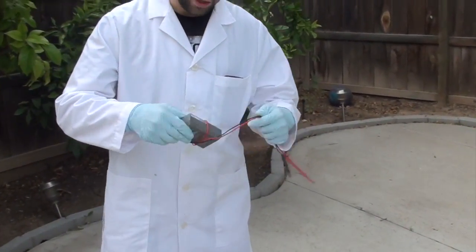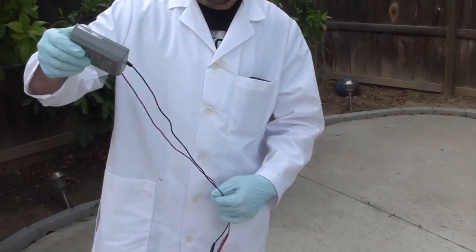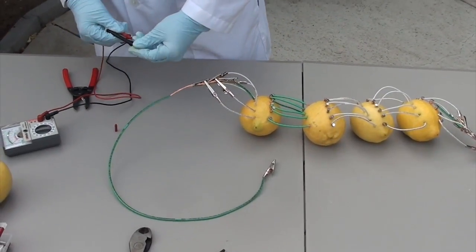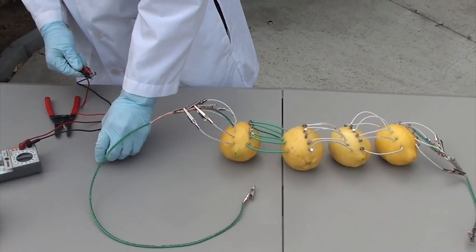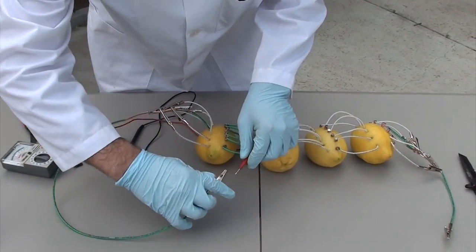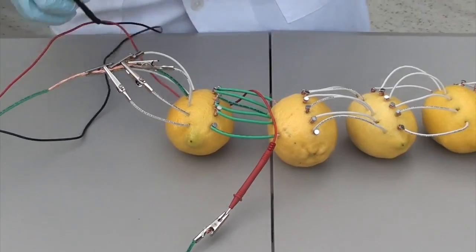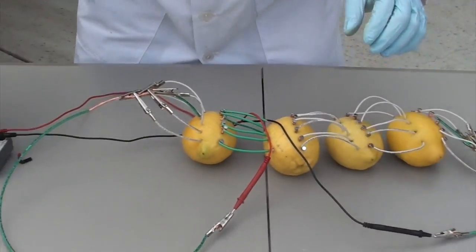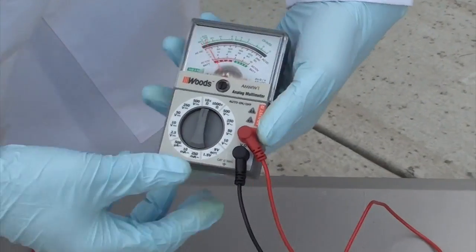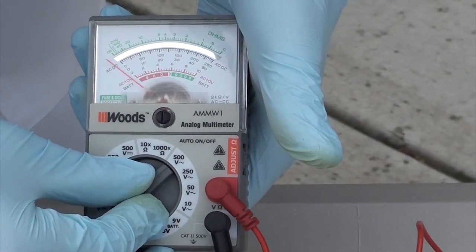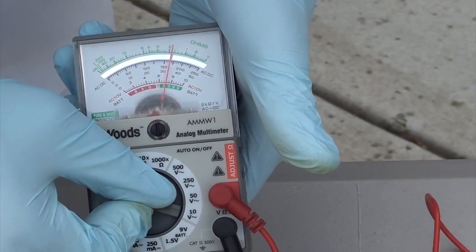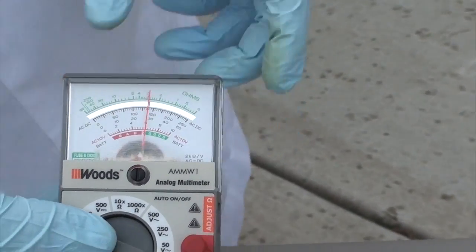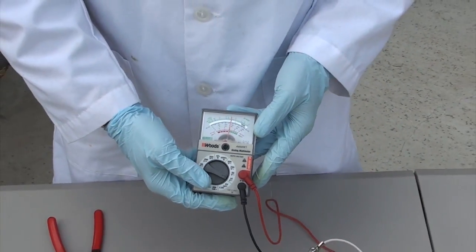Now we are going to check if our lemon battery actually produces a charge. So we're going to use this voltmeter and we're going to connect the red side to the positive end and the black side to the negative end. As you can see, we're going to twist this to DC 10 volts, and it should read that we have about 3 volts coming out of our lemon.